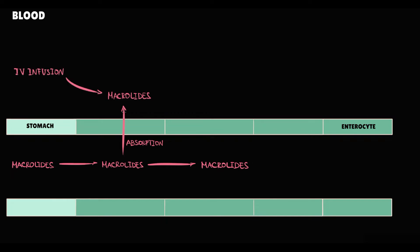Macrolides in systemic circulation provide systemic antibacterial effect in various tissues throughout the body, and macrolides that remain in the intestine provide intestinal antibacterial effect.